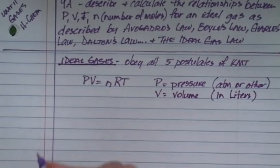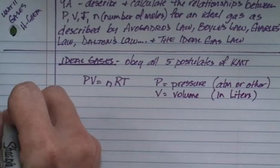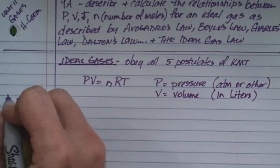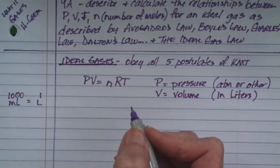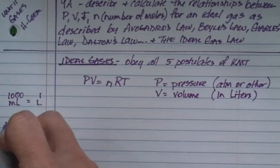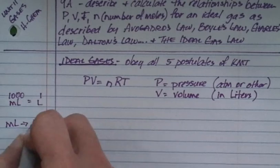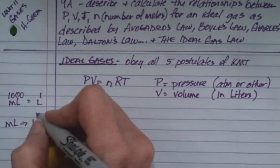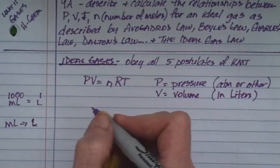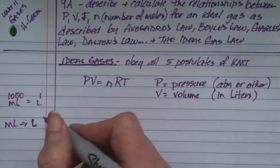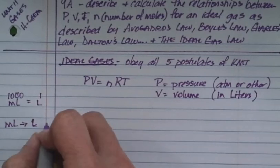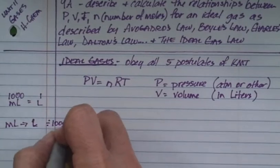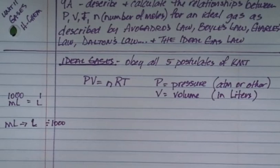Volume has to be in liters. How do you go from milliliters to liters? 1000 milliliters equals 1 liter. So if I want to go from milliliters to liters, say I've got 152 milliliters, I'm going to divide by 1000. If I want to go backwards, I multiply by 1000.